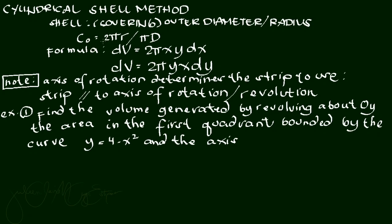The circumference of a circle is 2πr, where r is the radius, or πd where d is the diameter. The formula for the cylindrical shell method is given as dV = 2πx · y dx, where 2πx is the circumference and y dx is the area of the vertical strip. Similarly, dV = 2πy · x dy, where 2πy is the circumference and x dy is the area of the horizontal strip. Area times circumference gives us the volume, so that is in cubic units.